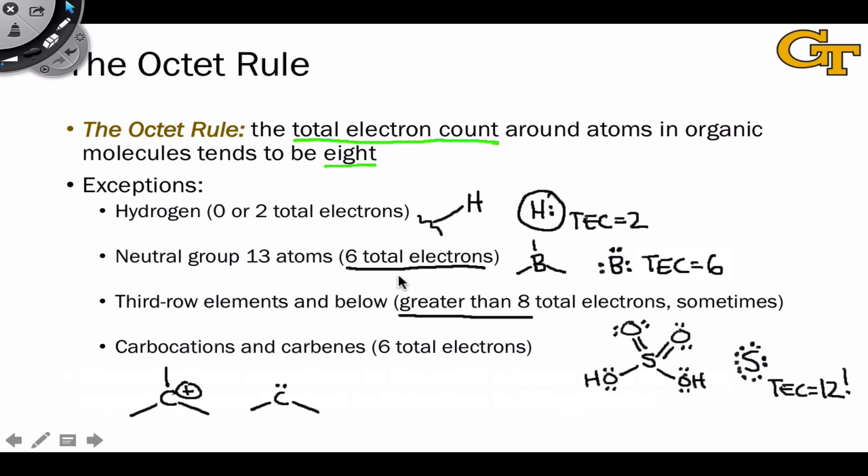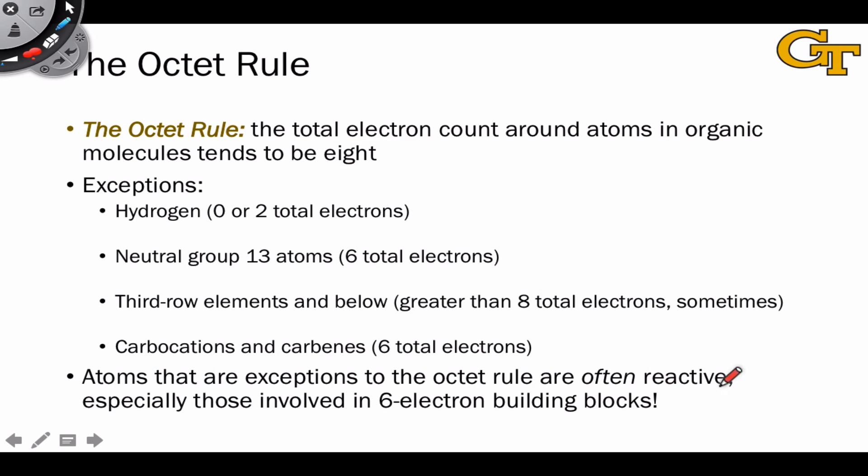An important thing to note about these species, the atoms with six total electrons, such as the carbocations, carbenes, and the group 13 atoms, is that these are often reactive, and they're often reactive in the sense that they want to accept a pair of electrons onto the atom with only six total electrons on it. So all three of these can accept electrons in this manner in reaction mechanisms. That reactivity is something to pay attention to as we get into talking about reaction mechanisms later in the semester.